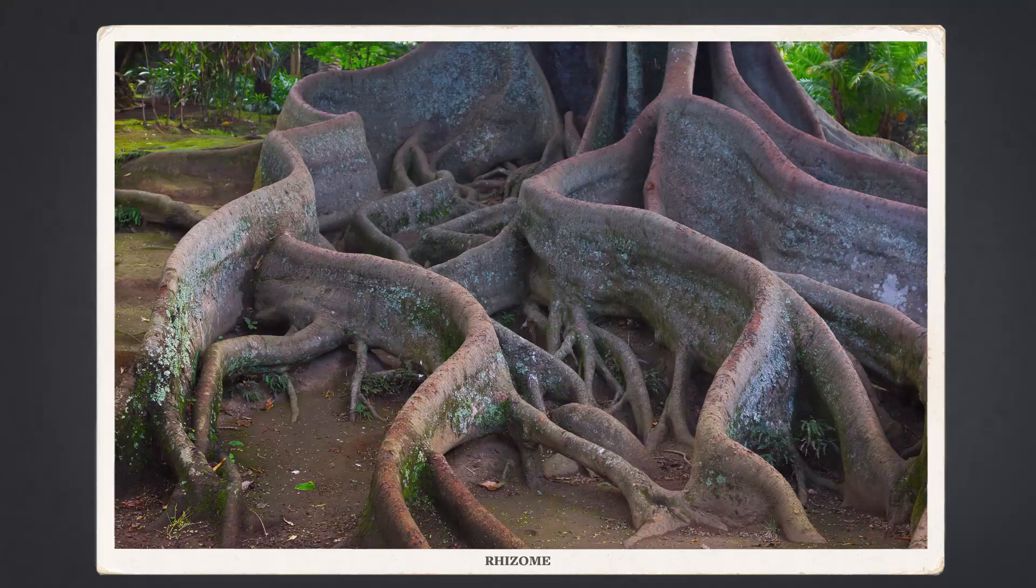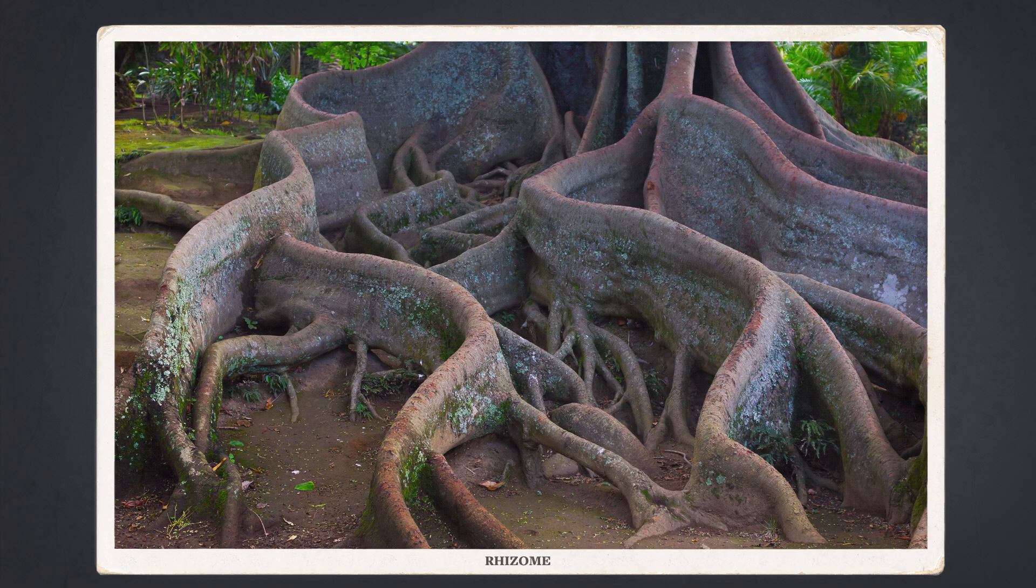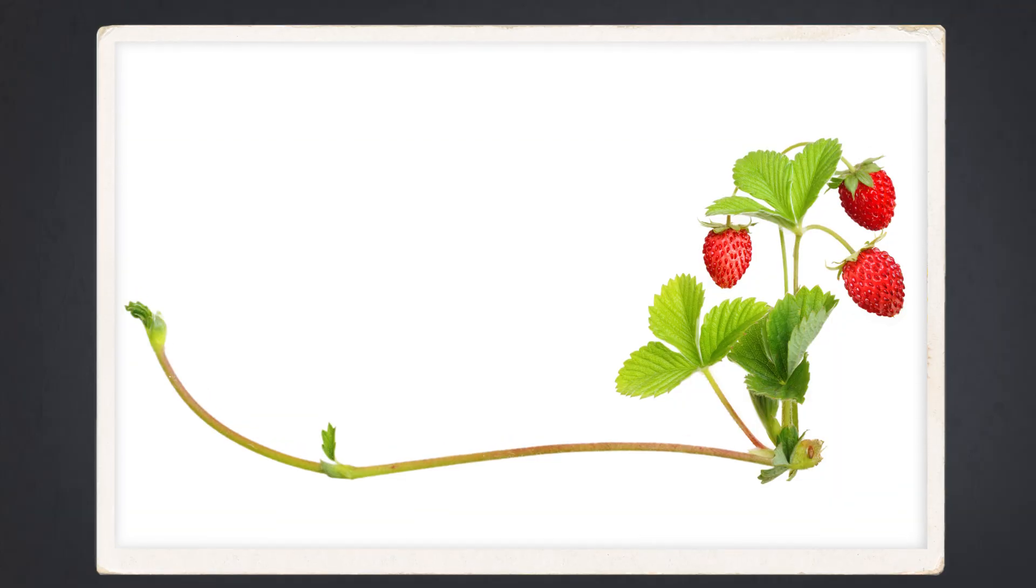He thought this could have been a rhizome, a special type of root that grows sideways, which some modern plants use to reproduce, sort of like the creeping vines that come out of a strawberry plant.